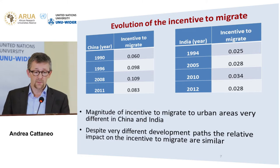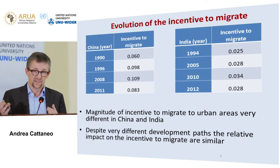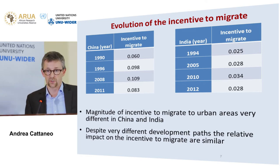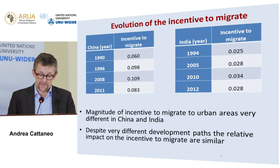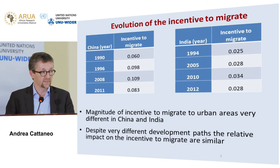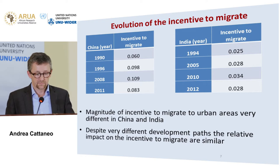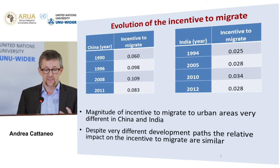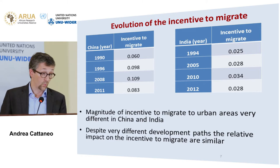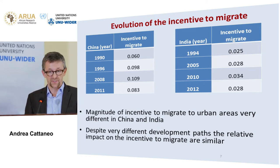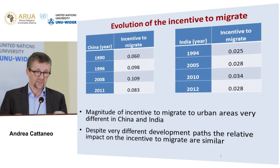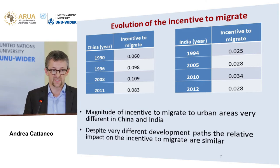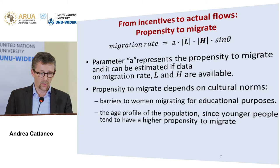Looking at India, similarly starting in the 1990s to 2012, the differential in distribution between rural and urban areas for poor and non-poor is much less stark. For China, the incentive to migrate increased even as the rural population was decreasing, then declined slightly as the poverty base shrank. In India there's a much lower incentive to migrate; it goes up, levels off, then declines but remains above 1994 levels. Despite very different development paths, the incentive to migrate evolved in a similar way.